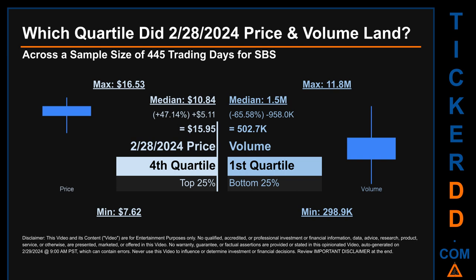Hello, my name is Maria. Which quartile did February 28, 2024 price and volume land in across a sample size of 445 trading days? The maximum end-of-day price for SBS was $16.53 while the minimum was $7.62. Within that price range, February 28, 2024's price of $15.95 landed within the fourth quartile, meaning it was within the top 25% of all sampled end-of-day prices. The day's volume landed within the first quartile — the bottom 25% of all sampled daily volume — which saw a max daily volume of 11.8 million and a minimum of 298,900. Quartiles tell us about the spread of a data set by breaking that data set into quarters, just like how the median breaks the set into half.